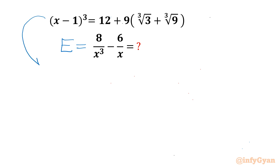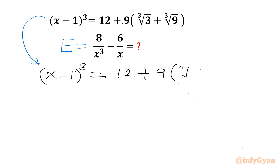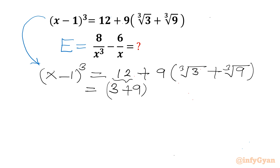I will write our given equation. Left hand side it is x minus 1 whole cube. Right hand side: 12 plus 9 in bracket cube root 3 plus cube root 9. Now I can split 12 as 3 plus 9, and 9 can be written as 3 times 3. Then our bracket is cube root 3 plus cube root 9.